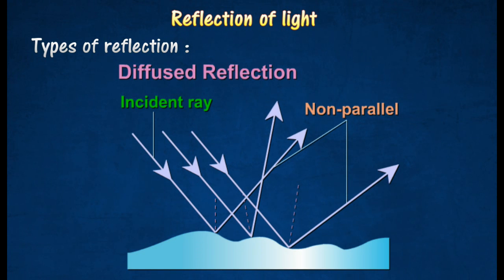Diffused reflection is the reflection of parallel light rays in all directions from a rough surface. No clear image can be formed by diffused reflection.